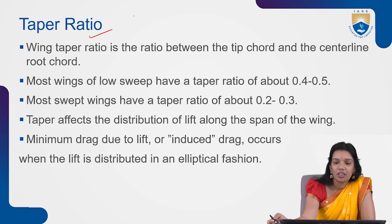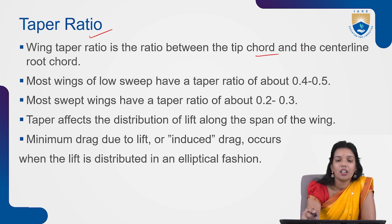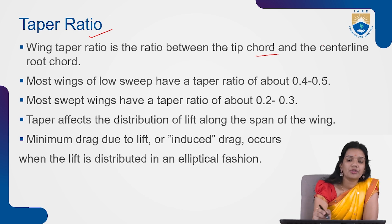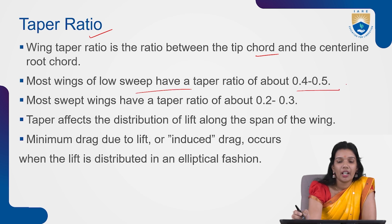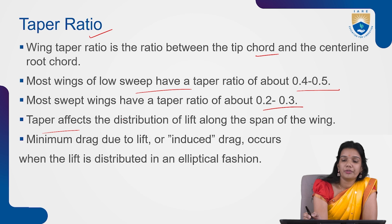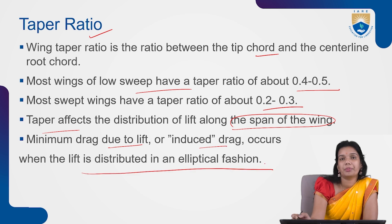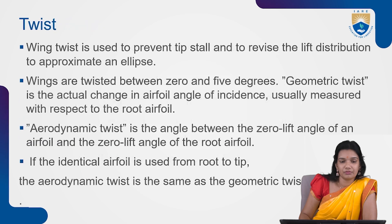Taper ratio is the ratio between the tip chord and the centerline root chord. Most low-sweep wings have a taper ratio of 0.4 to 0.5, while swept wings have a taper ratio of 0.2 to 0.3. Taper affects the distribution of lift along the complete wing span. Minimum induced drag occurs when lift is distributed in an elliptical fashion — an elliptical wing achieves this naturally.